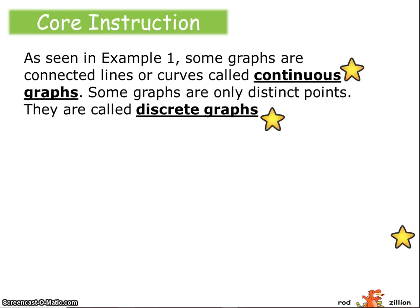So a couple terms. We mentioned continuous graphs. The graphs we just looked at are continuous graphs. They have connected lines or curves. Now some graphs are only distinct points, dots on the graph, and they're called discrete graphs.